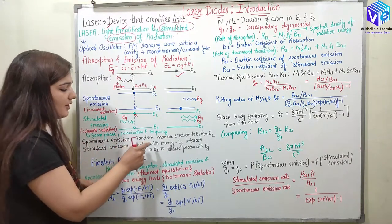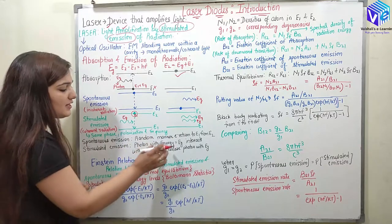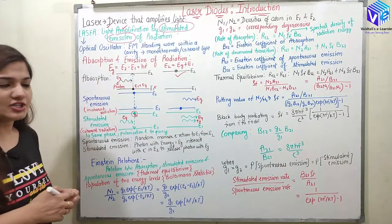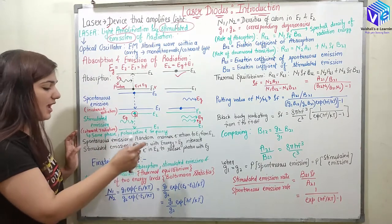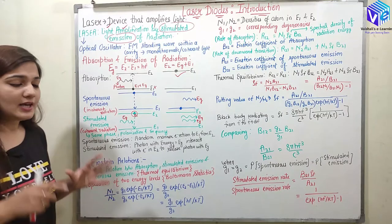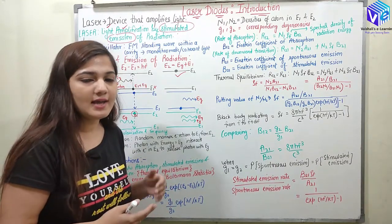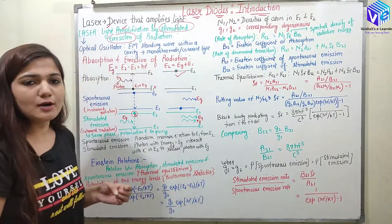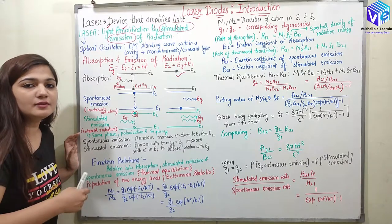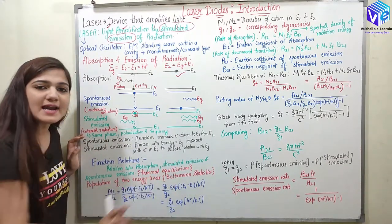Stimulated emission is the emission where a photon with energy EG interacts with electrons in E2, forcing them to release a photon with energy EG by coming back to E1. Now coming to the Einstein relation. Einstein gave the relationship between absorption, stimulated emission, and spontaneous emission. We are considering the thermal equilibrium state, where the number of electrons moving upward to the higher energy state equals the number of electrons going down to the lower energy state.